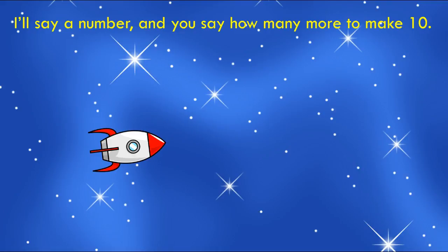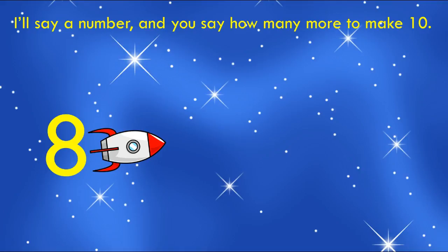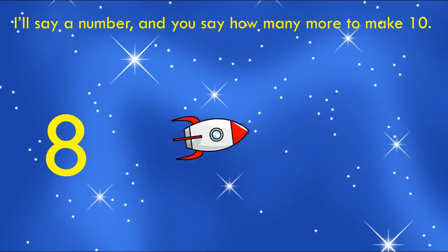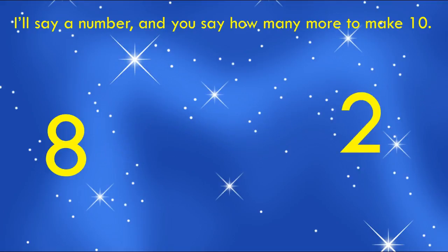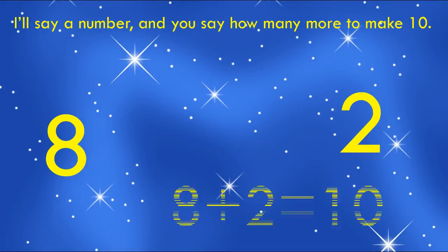Let's see if you can do this next one. Our first number is eight. How many more do we need to make the next 10? Write it down. Let's see what our rocket ship says — two. We needed two more to make the next 10. Go ahead and write down the number sentence. You should have written: eight plus two equals 10.